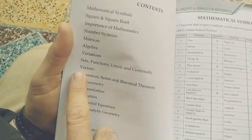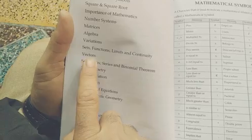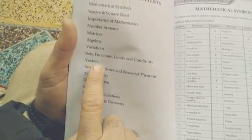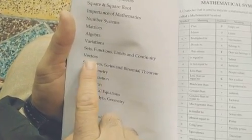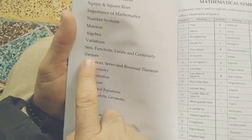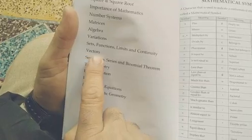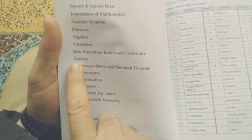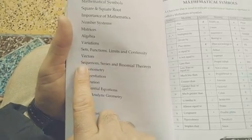This book also contains vectors — all the definitions and formulas used in vectors in detail. Dot product, cross product, scalar triple product — all formulas are here.